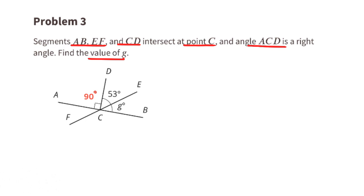90 degrees plus 53 degrees plus G equals 180 degrees. 180 degrees makes a half circle, and as you can see, this is a half circle. To find G, we can do 180 degrees minus 90 degrees minus 53 degrees. G equals 180 minus 90 minus 53, which is 37. So G is 37 degrees.